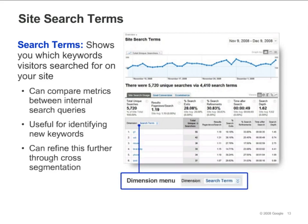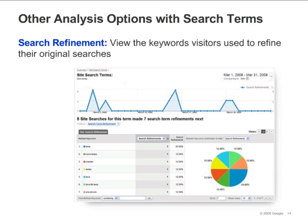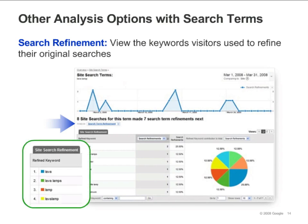You can cross-segment this traffic. For example, if you wanted to see which cities these visitors came from, you could select City from the Dimension drop-down. You can see how visitors who searched on a specific term refined their searches. To see this report, click on one of the terms in the table of the Site Search Terms report. Then, from the Analyze drop-down menu, select Search Term Refinement. This report shows you the terms visitors searched on after their original search, and which of these refinements are most popular. If many of your visitors search on a common refinement, you might consider modifying the results page to present information related to the refinement.